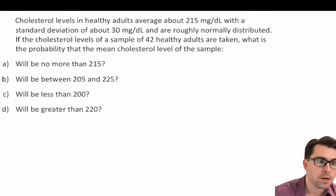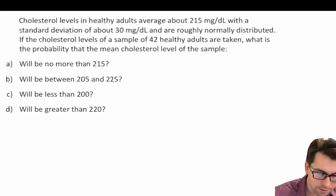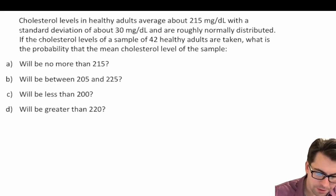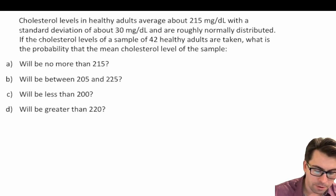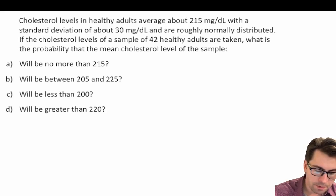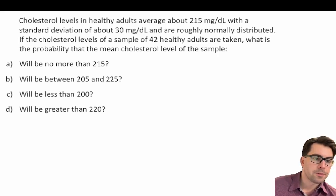Here's our first practice problem. Cholesterol levels in healthy adults average about 215 milligrams per deciliter with a standard deviation of 30 milligrams per deciliter and are roughly normally distributed. If the cholesterol levels of a sample of 42 healthy adults are taken, what is the probability that the mean cholesterol level of the sample will be no more than 215 milligrams per deciliter?